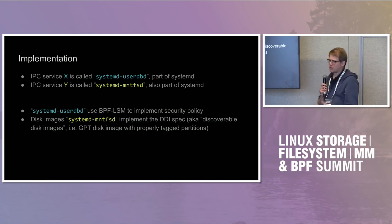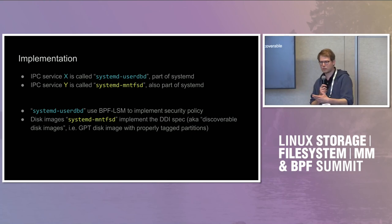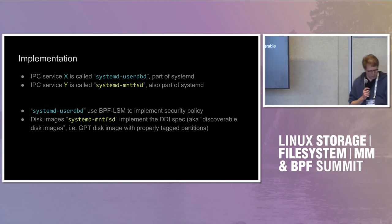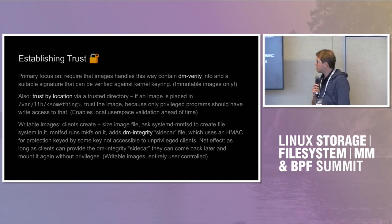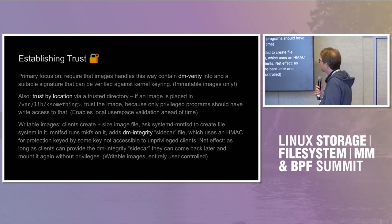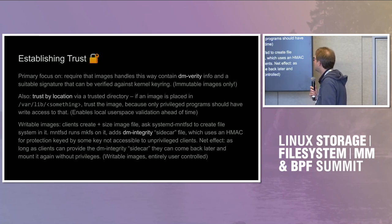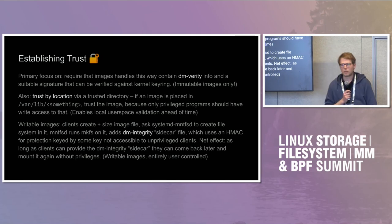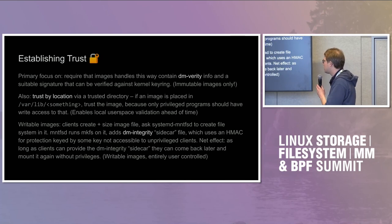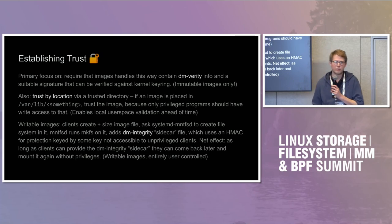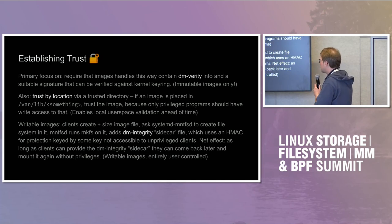By implementing this DDI spec, it's easy — people don't have to give us a lot of different resources; we just have one regular file that includes everything. Establishing trust is the big problem. DM-Verity is a big part of our solution. If you have a DDI image containing a file system, DM-Verity, and the signature, we pass all of that to the kernel and the kernel makes its decision. Another way is trust by location — a trusted directory where any image placed there is implicitly trusted. That's a weaker model.